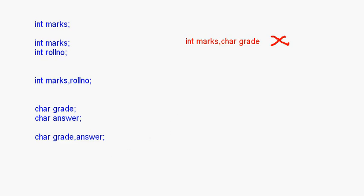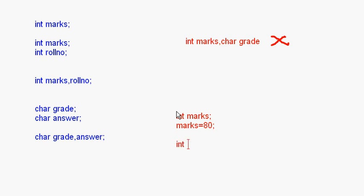While declaring a variable, you can also give it an initial value at the same time. One way is to declare first and assign later — like `int marks;` then `marks = 90;`. Alternatively, you can initialize in the same line: `int marks = 90;`.